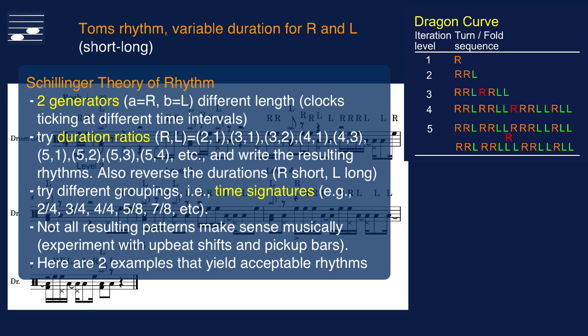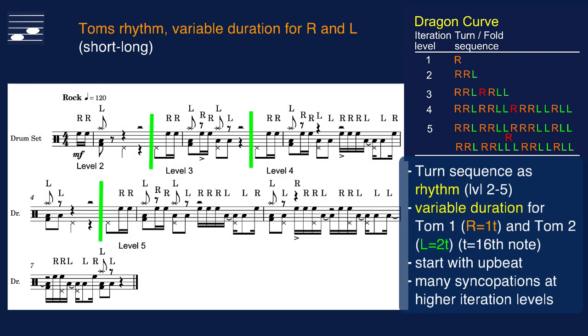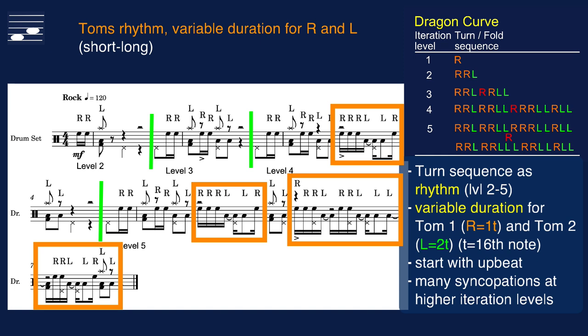The short-long duration rock toms rhythm in this example uses duration values 1T for R and 2T for L, where the time unit T is the 16th note. The phrases start with an upbeat, which works best here in the regular 4-4 time signature. As we saw before, phrase length increases at higher dragon curve iteration levels, and more and more syncopated notes appear.